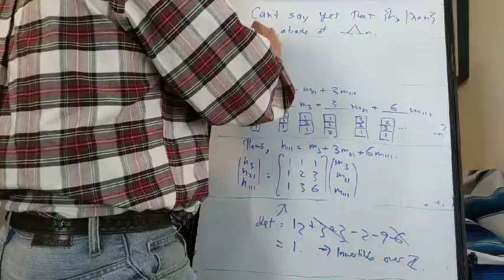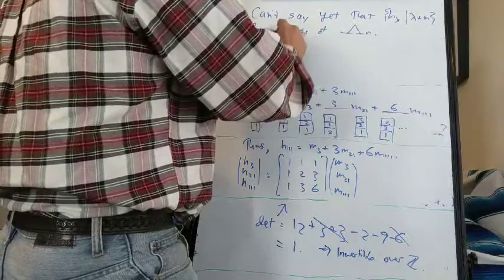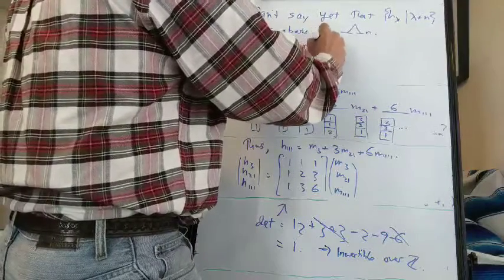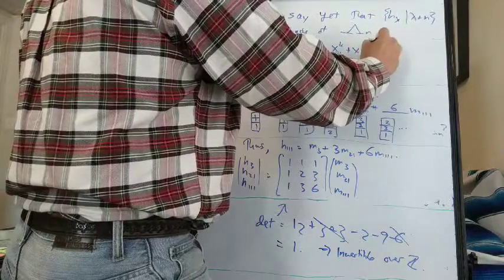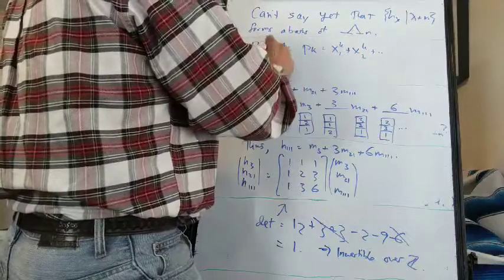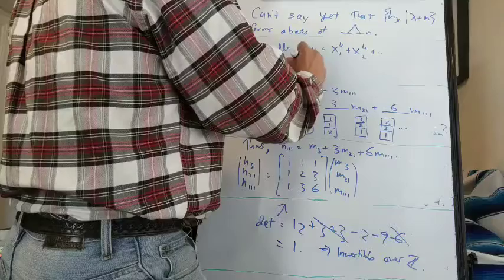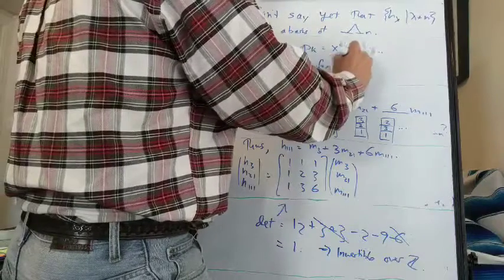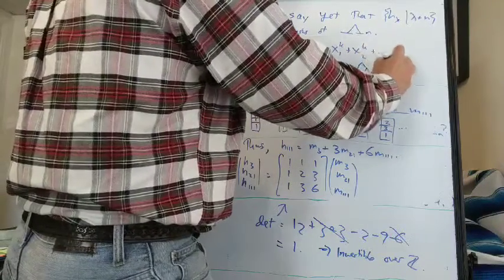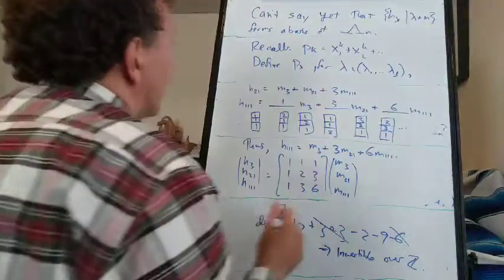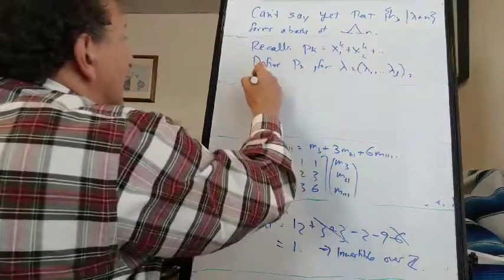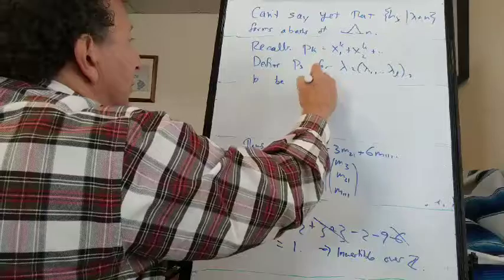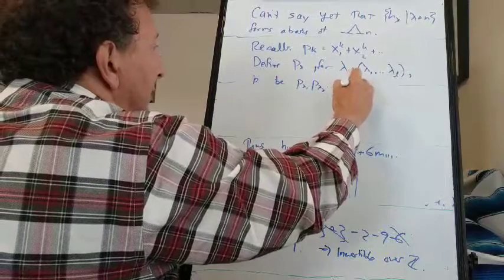Now let's look at power sum symmetric functions. p_k is defined to be the sum of all variables to the k-th power. And we define p_lambda, if lambda is a partition with l parts, to be p_{lambda_1} times p_{lambda_2} and so on up to p_{lambda_l}.